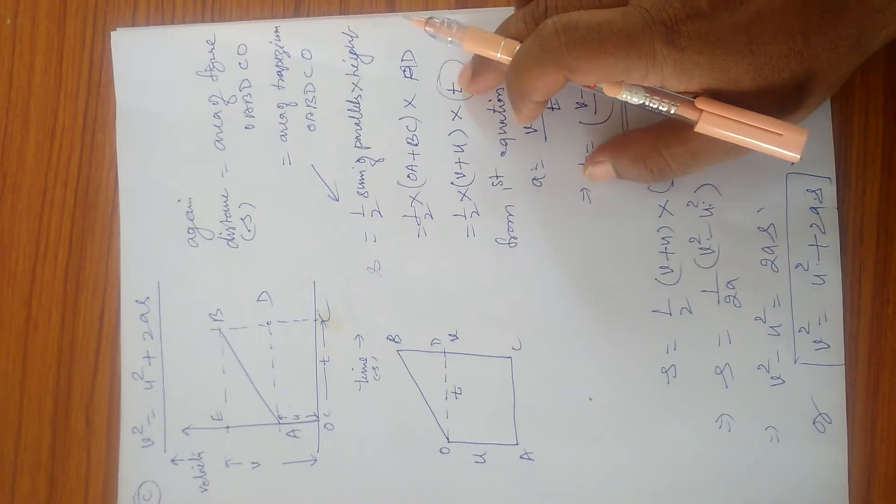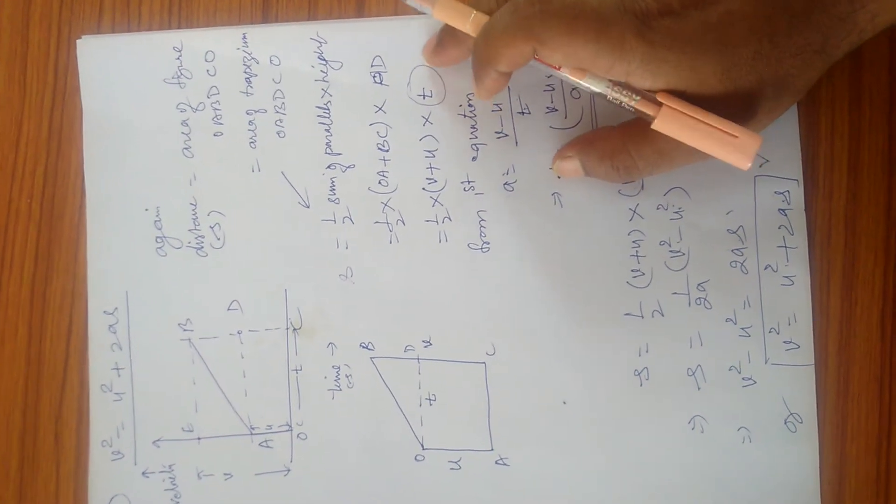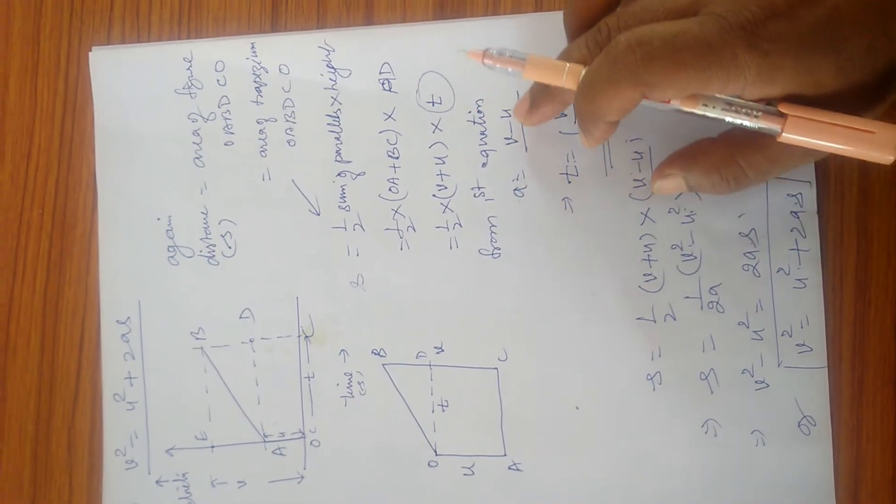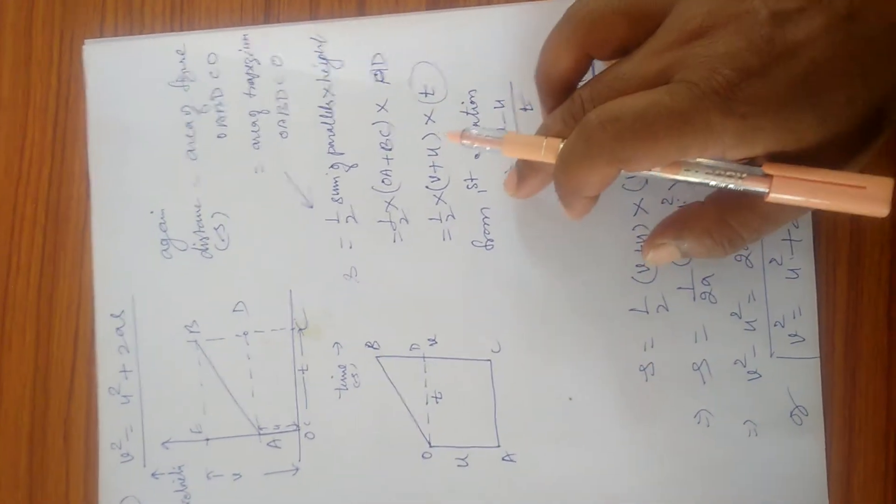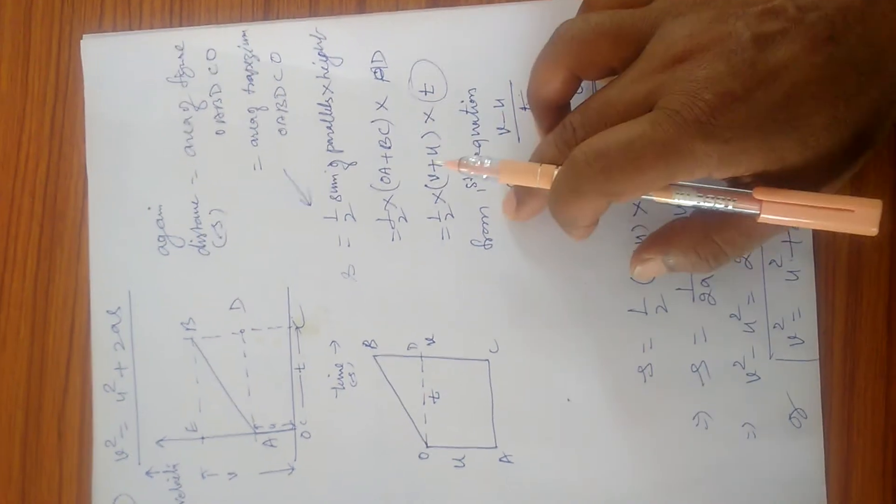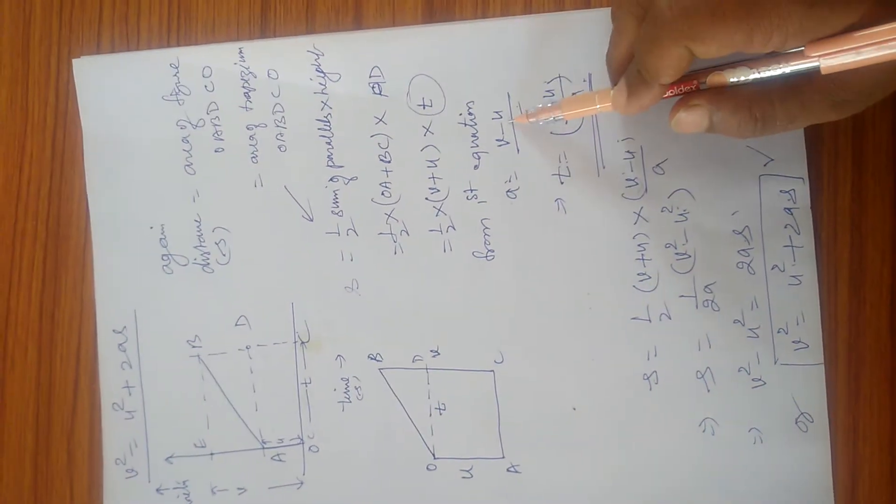Now find the value of time from the first equation. That is a = (v - u)/t. Interchanging these two terms, so t becomes (v - u)/a.